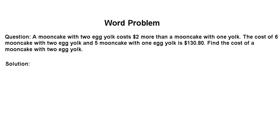Let's read the word problem. It says: a moon cake with two egg yolks costs two dollars more than a moon cake with one egg yolk. The cost of six moon cakes with two egg yolks and five moon cakes with one egg yolk is $130.80. Find the cost of a moon cake with two egg yolks. Let me give you a quick overview of what this question is actually asking.